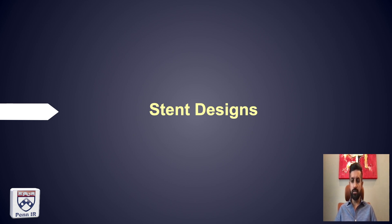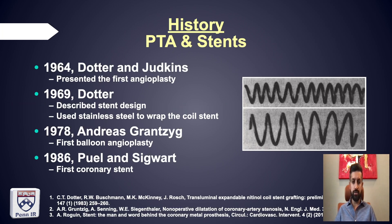Now that we understand the complex biomechanics, let's move on to stent designs. Starting with a bit of history: in 1964, Dotter and Judkins presented the first angioplasty using serial dilators. In 1969, Dotter described stent design using a stainless steel wrap to create the first coiled stent. In 1978, the proper first balloon angioplasty was performed by Grüntzig, and in 1986, Puel and Sigwart did the first coronary stent.